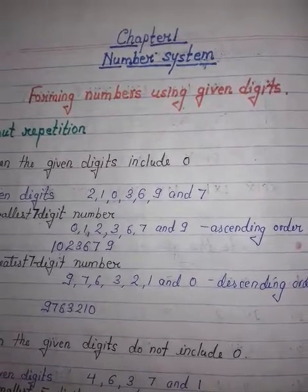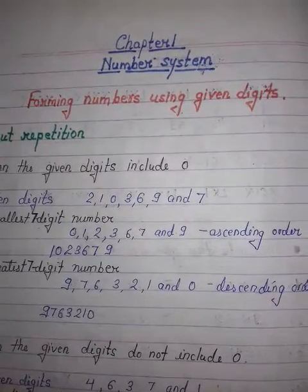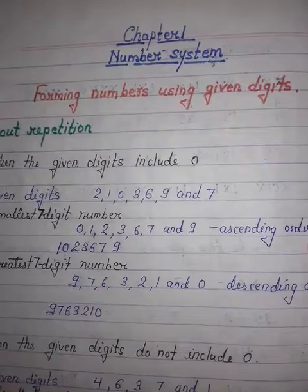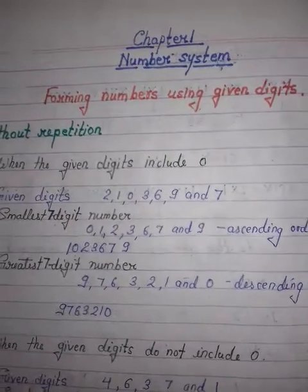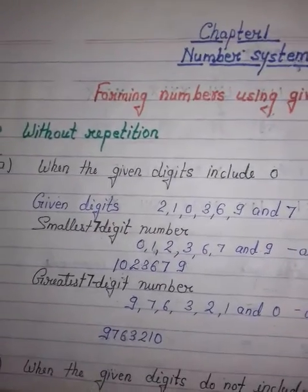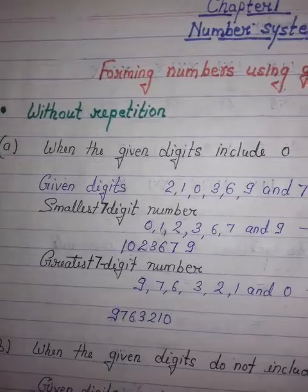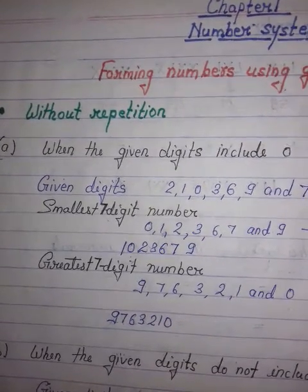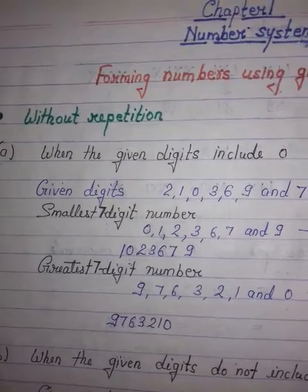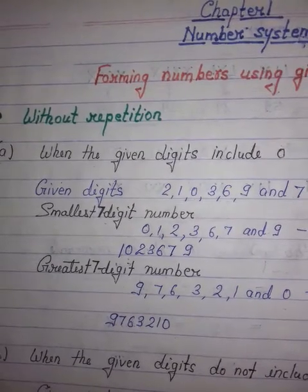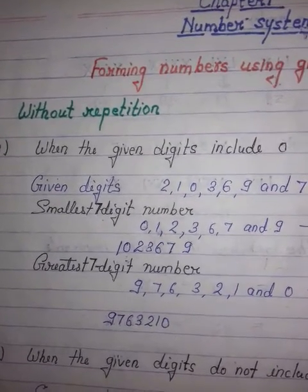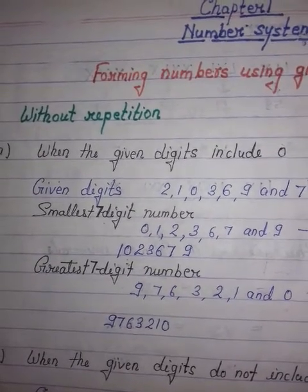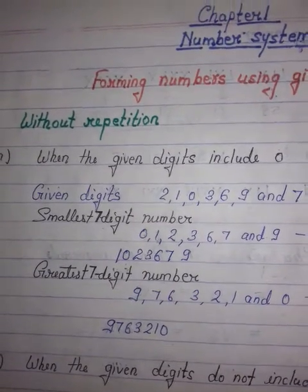If you have given digits, how can you form the greatest and smallest number? Today we will see this. There are two ways to form the numbers. First one is without repetition — the given digits cannot be repeated. And the second way is with repetition, meaning the given digits can be repeated.